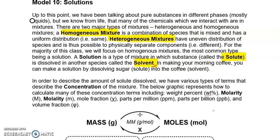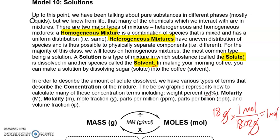For example, if I have 18 grams of water and I want to get to moles of water, I take the molar mass of water — 18.02 grams per one mole — and divide by the molar mass. The grams cancel, giving me approximately one mole. So if you want to go from mass to moles, you divide by molar mass. Make sure that conversion is cemented in your brain.